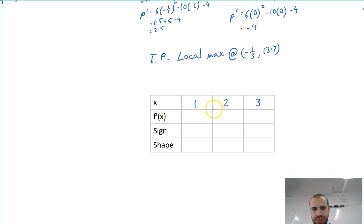I know 2, f dash x of 2 is going to be 0 because it is the turning point. The sign, there's no sign. Just call it 0. The shape is going to be flat. Let's sub 1 in first because that's going to be easy. p dash equals 6 times 1 squared minus 10 times 1 minus 4. That's a big negative number. That's a negative number, which looks like that.